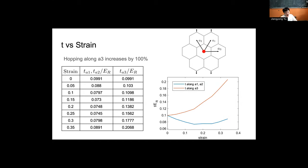But the hopping perpendicular to the direction that we're straining is increasing by a lot. By the time we get to something like a 30 percent strain, we're seeing nearly a hundred percent increase in the hopping amplitude.